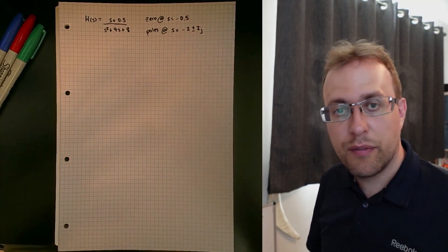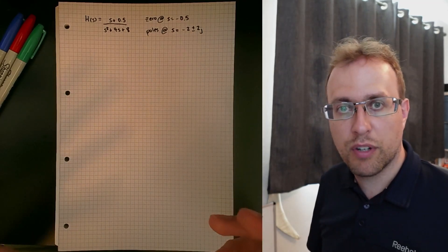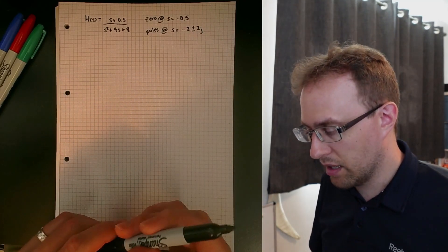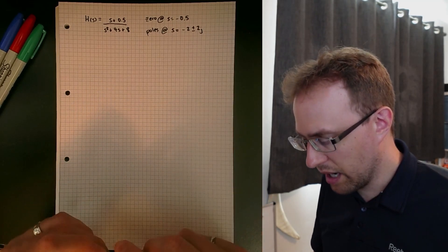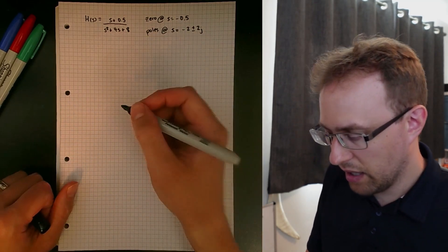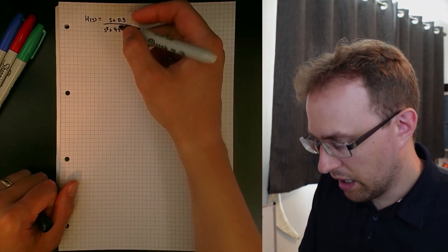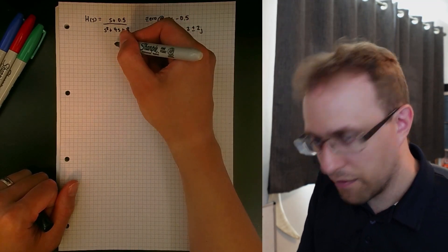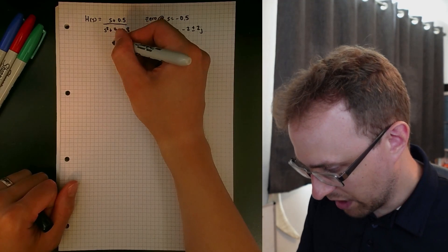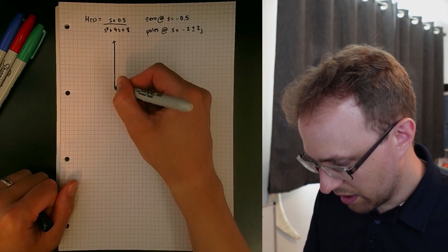We needed to find the zeros and poles in order to use the geometric approach for determining the frequency response and being able to plot it. What I'm going to do now is plot the poles and zeros in the s-domain. I'm going to do that on a fairly large space so we have room to include everything.